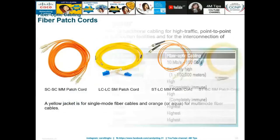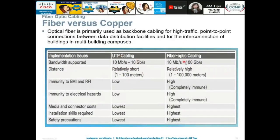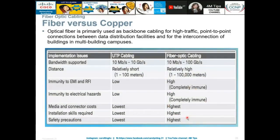Comparing UTP to fiber optic: UTP supports up to 10 Gbps and a maximum distance of 100 meters, while fiber optic supports up to 100 Gbps and distances of 1 km or more. However, fiber optic requires special installation skills since the glass core breaks easily, higher safety precautions, and more expensive connectors.